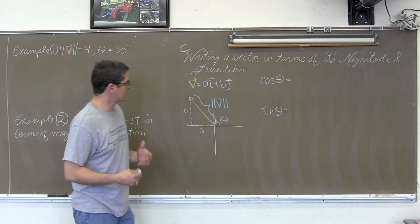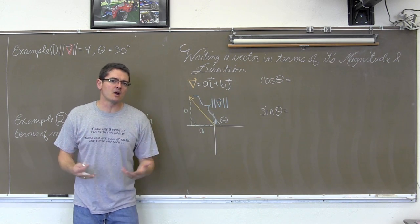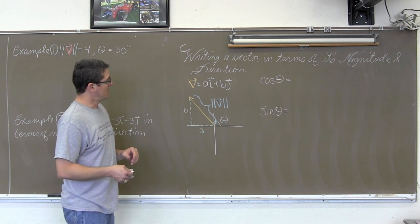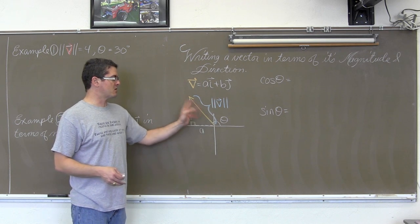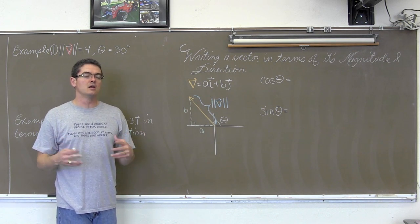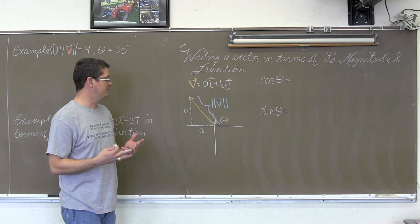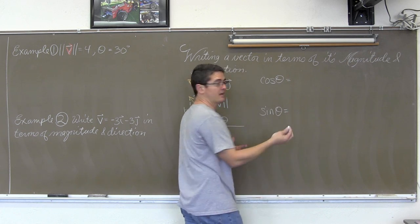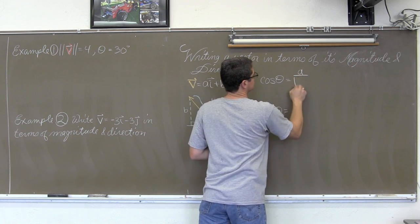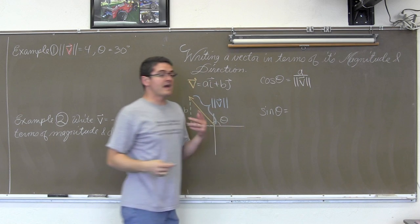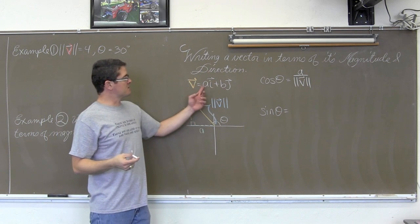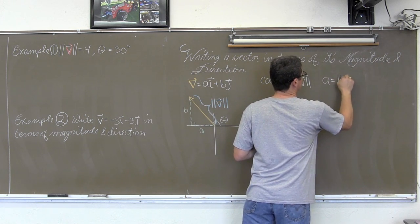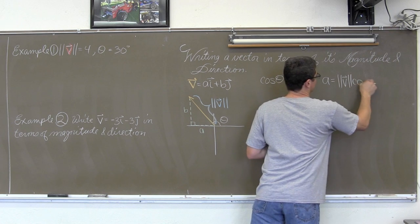Let's just look at the cosine of theta. The cosine of theta is adjacent over hypotenuse. Since I have put my initial side on the origin, you can think of it as x over r. We need to lose that r idea because vectors don't have to be placed on the origin, so r as a radius of a circle kind of loses its meaning. So the cosine of theta is going to be a over the magnitude of v, which is just simply a length. Thus, a — the coefficient of the horizontal component — is going to be equal to the magnitude of v times the cosine of theta.